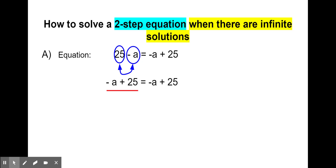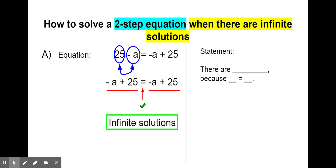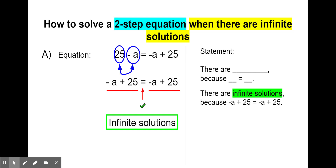We notice that on the left we have the expression negative a plus 25 equal to the same expression on the right. That equal sign holds true — the same on the left equals the same on the right. So from here we don't even have to add a to both sides or subtract 25 from both sides. We have infinite solutions — that's our answer, and we saved ourselves a couple of steps. For the statement: there are infinite solutions because negative a plus 25 equals negative a plus 25. And that's how we solve a two-step equation when there are infinite solutions.